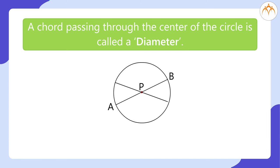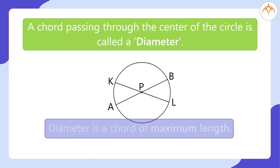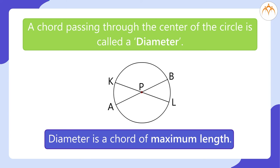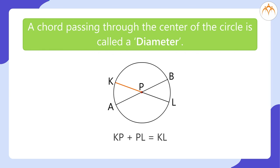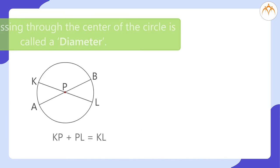Now, draw one more chord passing through the center of the circle. Name it as KL. A circle can have many diameters as AB and KL. Diameter is a chord of maximum length. KP plus PL is equal to KL. AP plus PB is equal to AB.